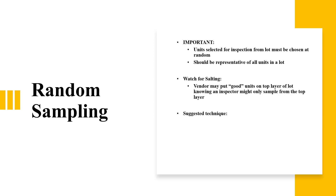Sample units selected for inspection from a lot must be chosen at random and should be representative of all units in the lot. You should not pick items from only one specific location — if there are different warehouses, select items from different warehouses and different portions. Watch for 'salting' — a vendor may put good quality units on the top layer and defective ones on the bottom, so you need samples from the top, middle, and underneath.